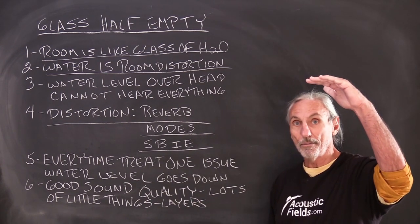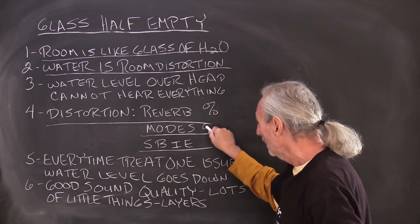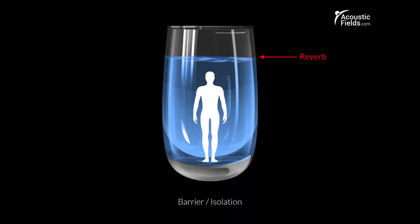So those all cause the water level to rise. Each one of those contributes a certain percentage to the problem. And you've got to just start working at those percentages and go forward from there.